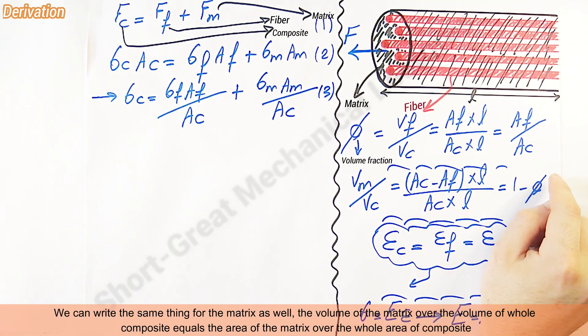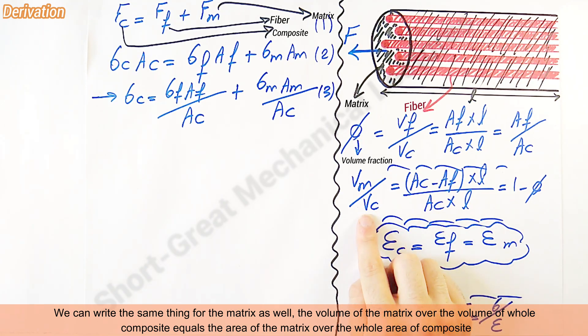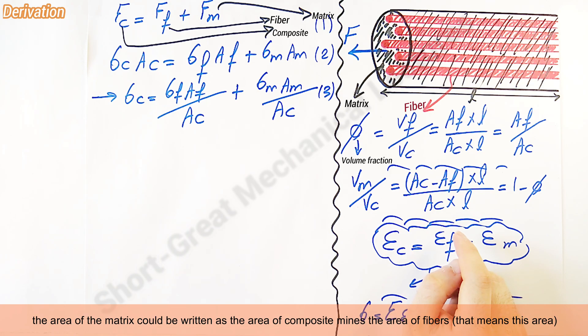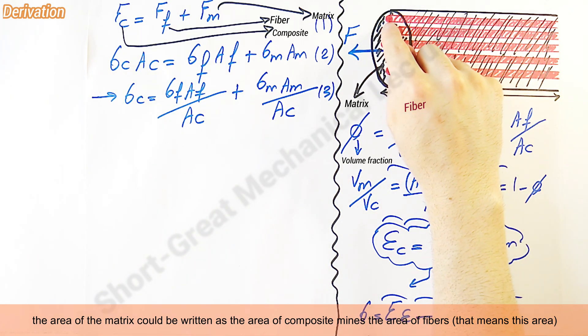We can write the same thing for the matrix as well. The volume of the matrix over the volume of whole composite equals the area of the matrix over the whole area of composite. The area of the matrix could be written as the area of composite minus the area of fibers.